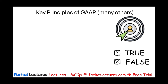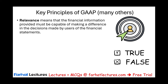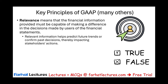Now, there are key principles in GAAP — there are many of them, but I'm going to mention two here. We'll mention a few more when we look at something called the framework. One is relevance. Basically, GAAP states that when you provide information, the financial information must be capable of making a difference in the decision made by users — it means the information is relevant. Relevant means it helps you predict the future trend or confirm past decisions, thereby impacting the stakeholder's action.